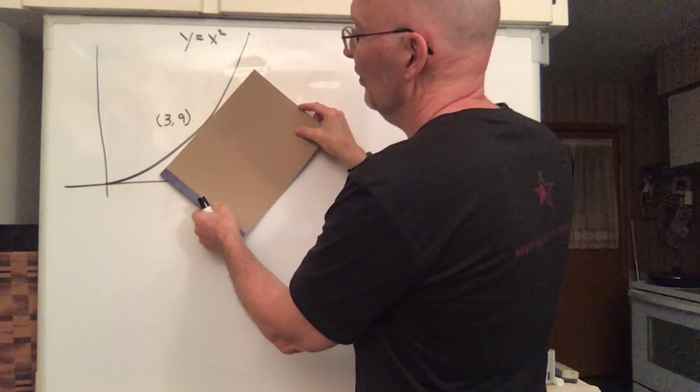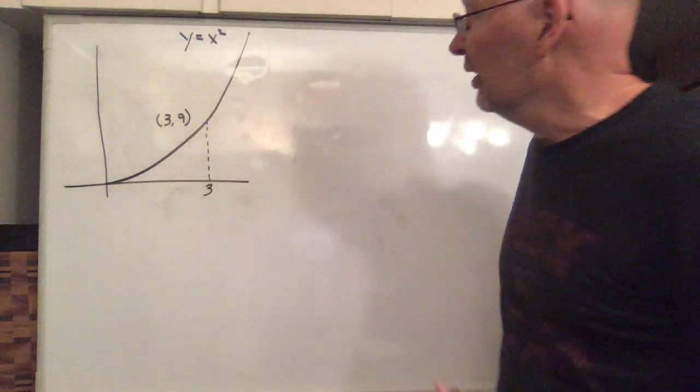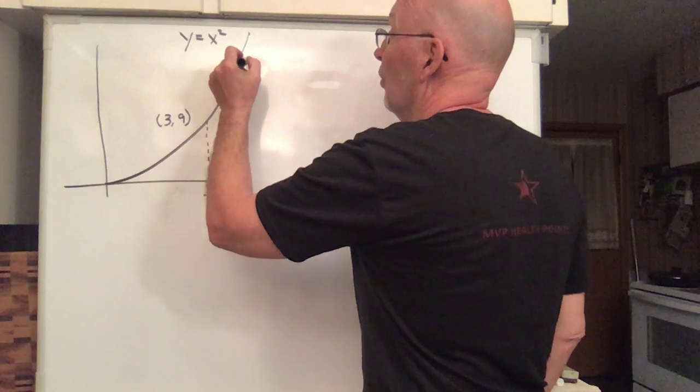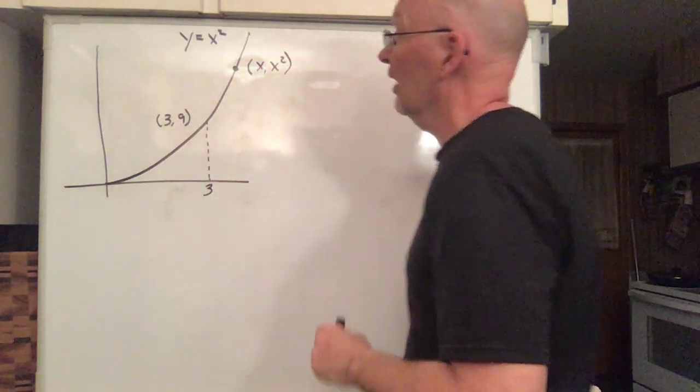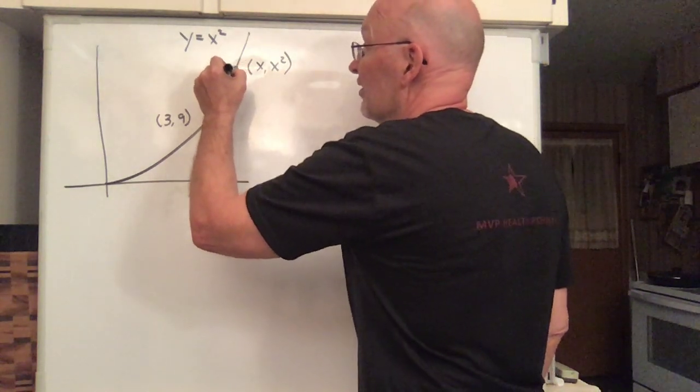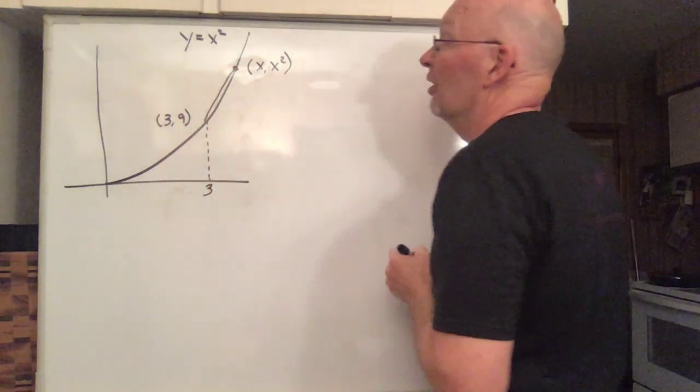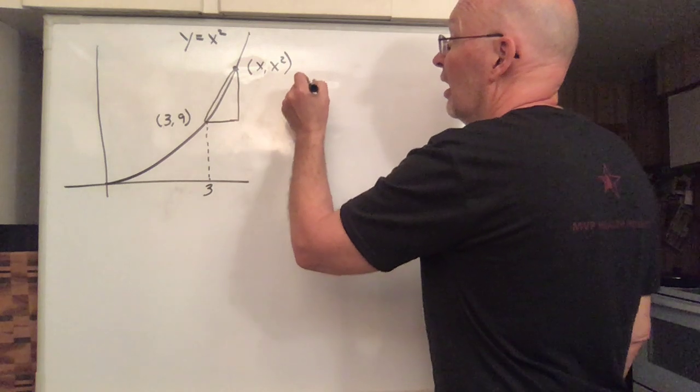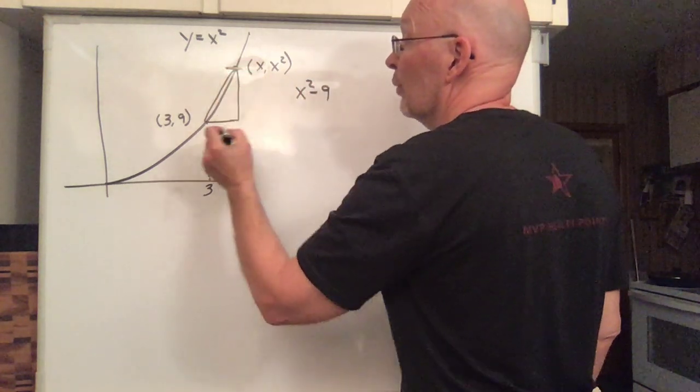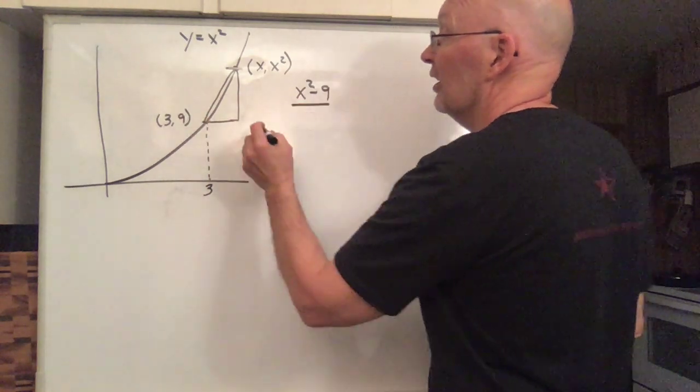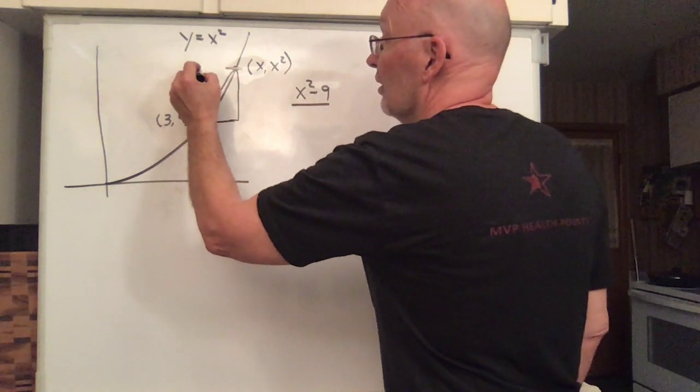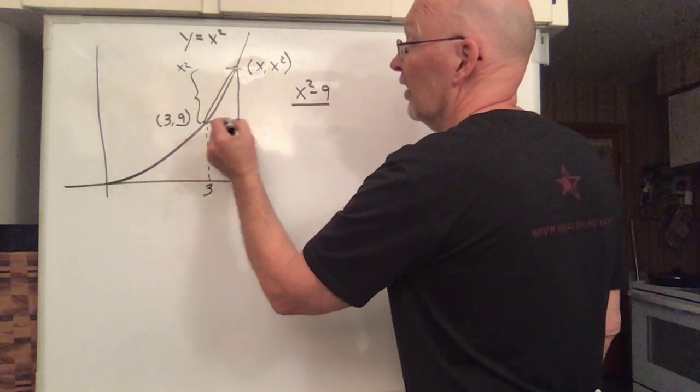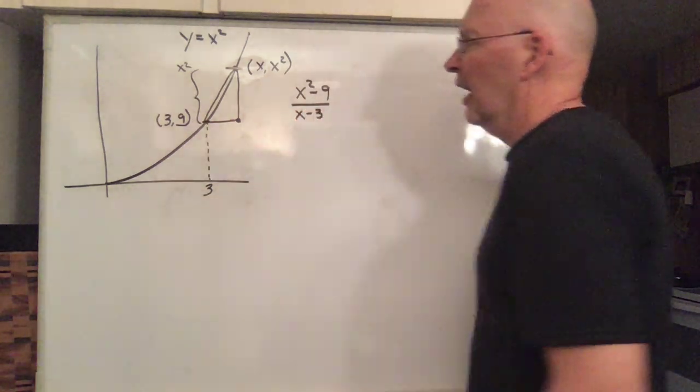Well, that's fine. That tells us what we're after, but it doesn't help us to get it. In order to get it, what we're going to do is we're going to take another point just a little bit away from it, and let's say that this point is the point x, x squared, so there's a point on the graph x, x squared, and then we're going to draw the line segment that goes between these two points. So the slope of this line segment here would be the change in the y values x squared minus 9, because this height is x squared, and this height is 9, divided by the change in the x values, this value is x, and this value is 3.